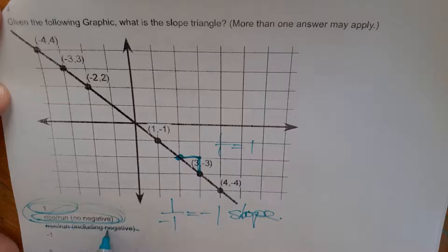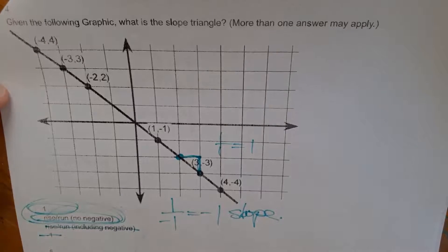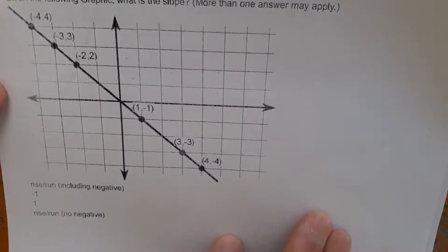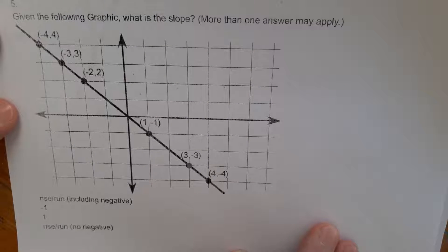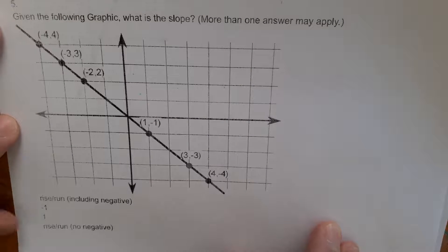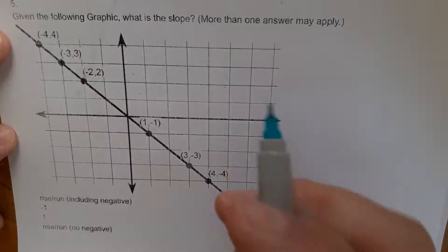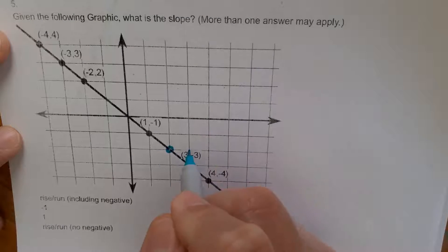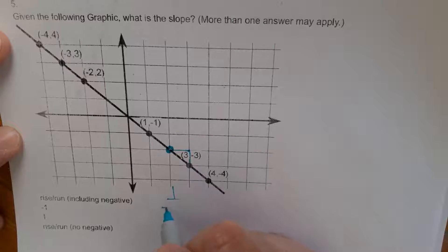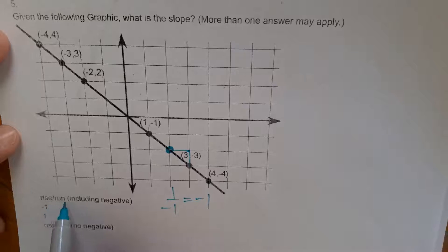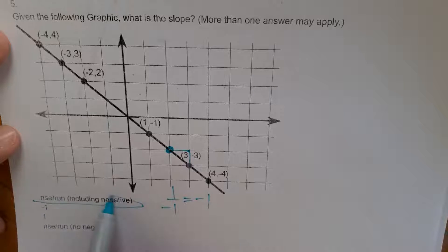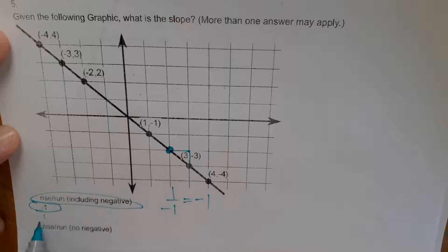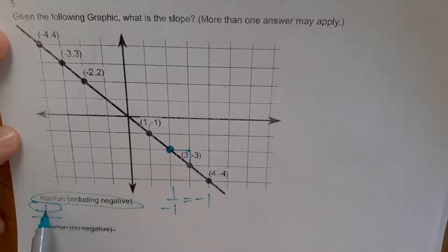But the slope triangle is a positive one. So these two here are the right answers. This is out because it says including negative. And this is out because it's got a negative on it. What's the slope in this one? So the last one asked for slope triangle. Now it's asking for slope. So we already did this one. We went point to point. We rose one and went to the left one. One over negative one equals a negative one slope. So rise over run, including negative true, negative one true. Nope, not the one, not the no negative.